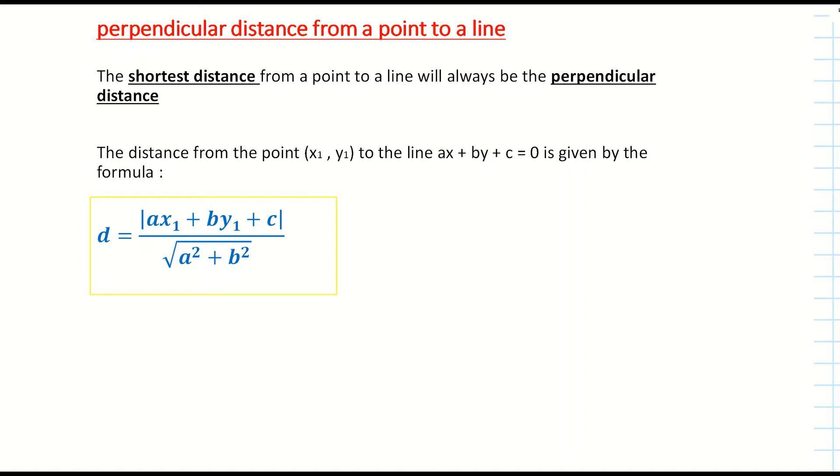The a is the number that's in front of the x in the equation of the line. The b is the number in front of the y from our equation. And then you have your c, which is the number on its own, the constant.